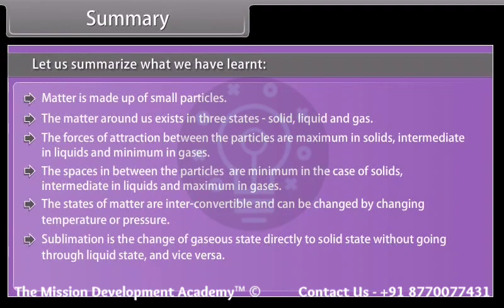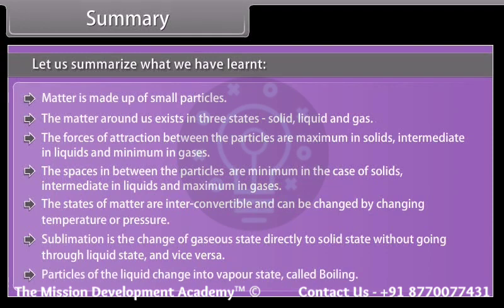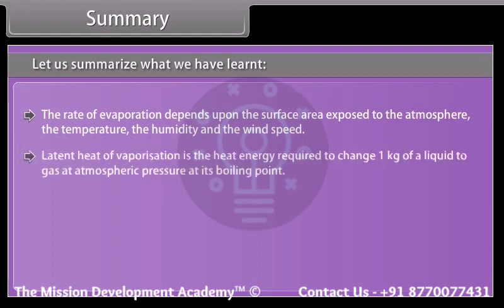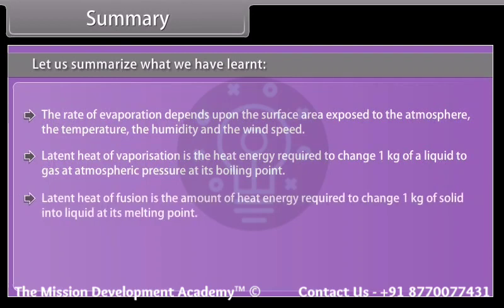Sublimation is the change of a gaseous state directly to a solid state without going through the liquid state, and vice versa. Particles of a liquid changing into vapor state is called boiling. The rate of evaporation depends upon the surface area exposed to the atmosphere, the temperature, the humidity, and the wind speed. Latent heat of vaporization is the heat energy required to change one kilogram of a liquid to gas at atmospheric pressure at its boiling point.